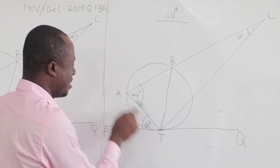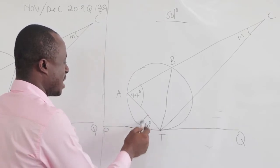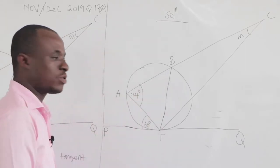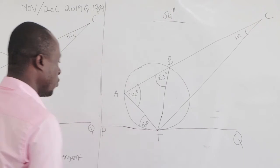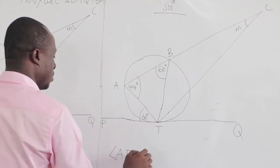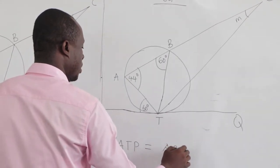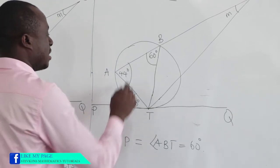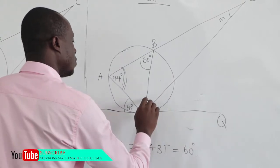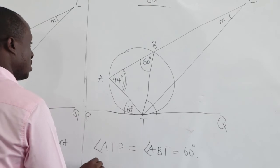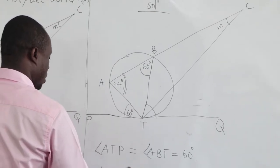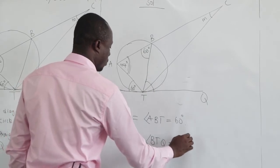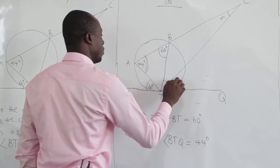The angle the chord and the tangent make is equal to the angle the chord makes in the alternate segment. For chord AT and tangent PT, the angle it makes here equals the angle AT makes in the alternate segment. So angle ATP equals angle ABT, which is 60 degrees. Similarly, angle BTQ equals angle BAT, which is 44 degrees.